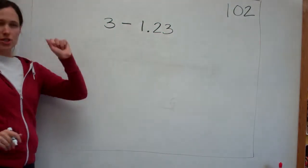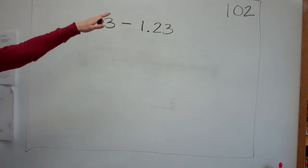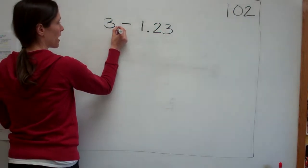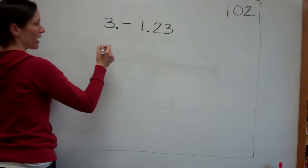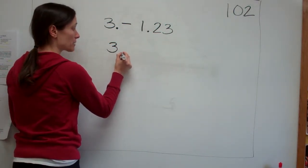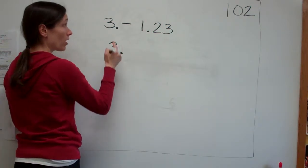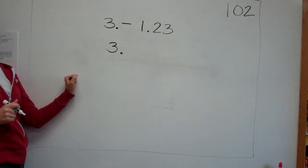Now, what do you remember about whole numbers? Put a decimal behind the 3. You have to have a decimal behind the 3. Very good. Okay, we're still going to line up our decimals. What's behind the 3? Always.